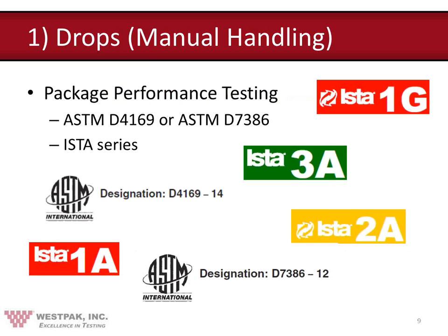Drop testing is found within package performance testing standards like ASTM D4169, ASTM D7386, or the ISTA series. It is a pass or fail criteria where the package system is able or not able to protect and keep its contents intact. These performance standards, as opposed to the drop test standard, tell us the intensity and duration of the test — in the case of drop testing, the intensity is the drop height and the duration includes the number and orientation of impacts. So D5276 says how to do it, and D4169 says how high and how many times.